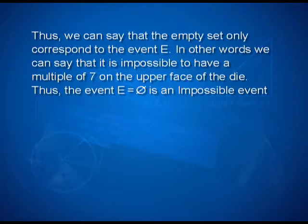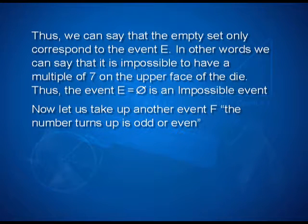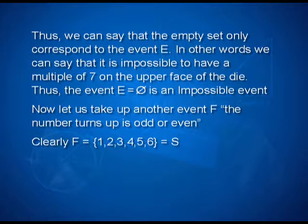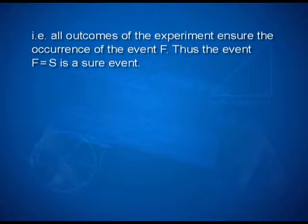Thus, the event E = phi is an impossible event. Now let us take up another event F: the number turns up is odd or even. Clearly, F = {1, 2, 3, 4, 5, 6}, which equals S. That is, all outcomes of the experiment ensure the occurrence of event F. Thus, the event F = S is a sure event.